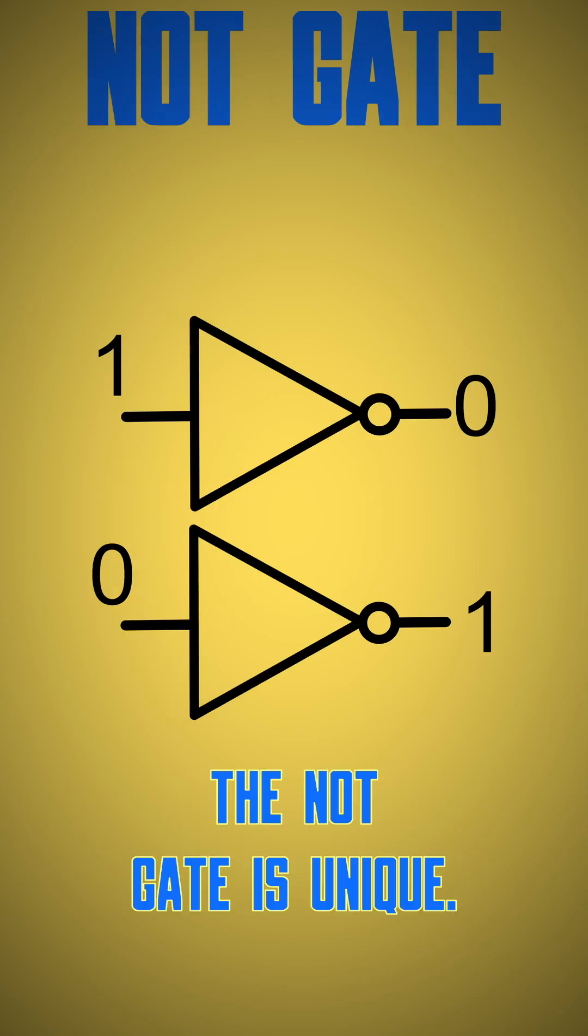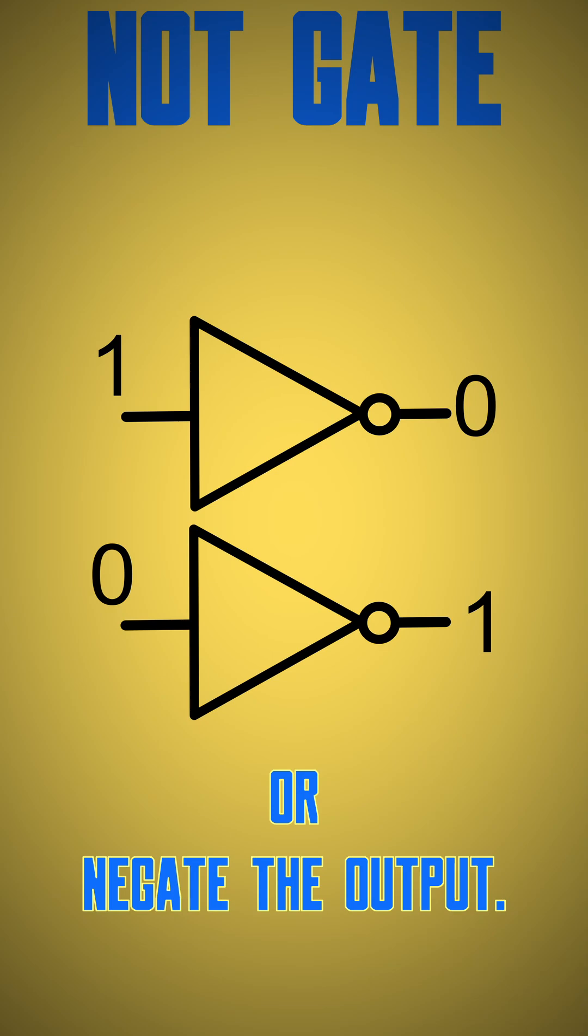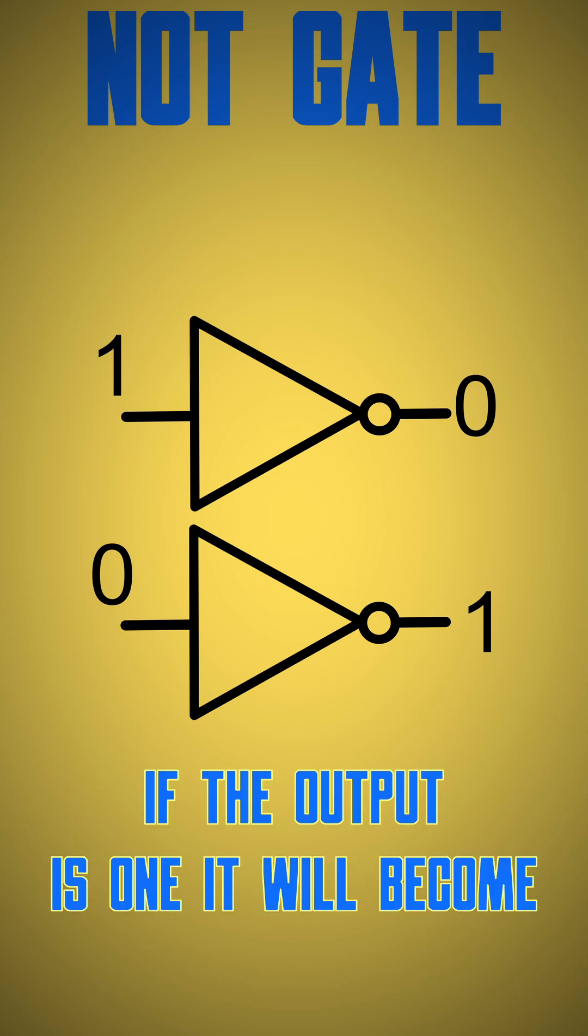NOT gate: the NOT gate is unique. It basically inverts or negates the output. If the output is one, it will become zero, while the output zero will become one.